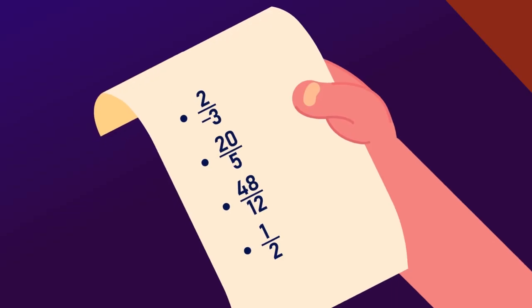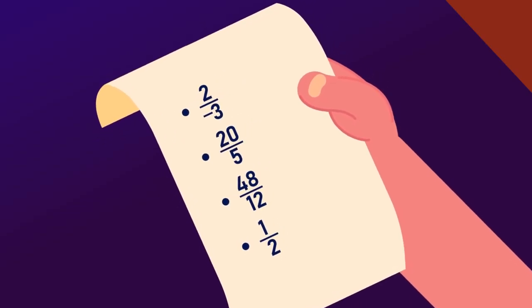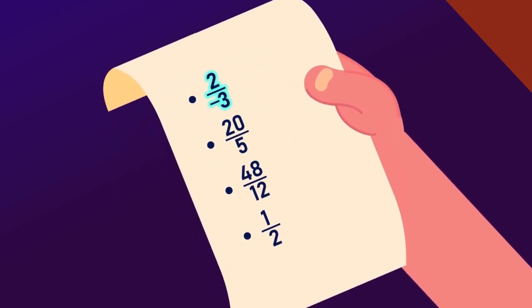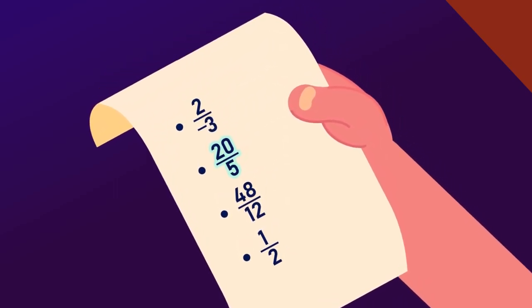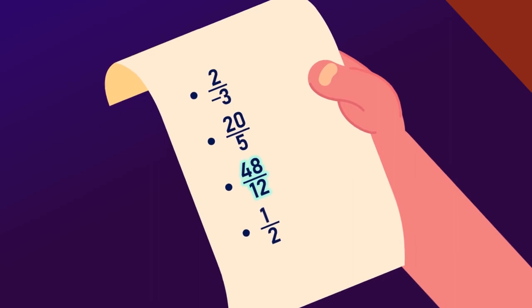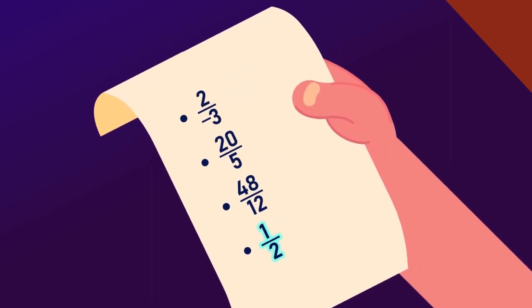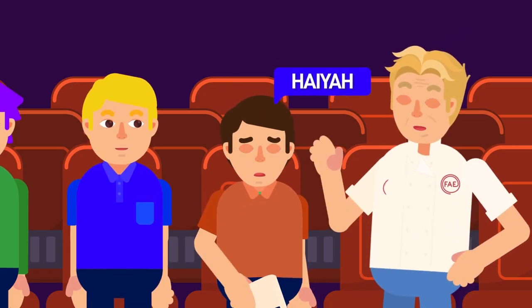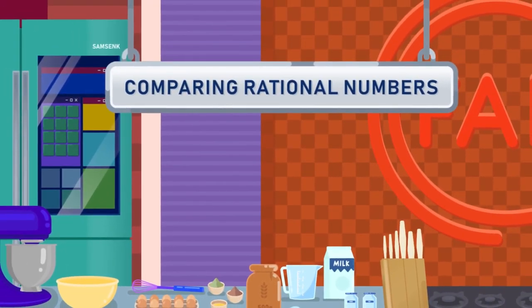Now let's move on to a practice step where you will be tested. Which of the following rational numbers are in standard form: 2 over minus 3, 20 over 5, 48 over 12, or 1 over 2? Comment your answers to find out how you have performed.